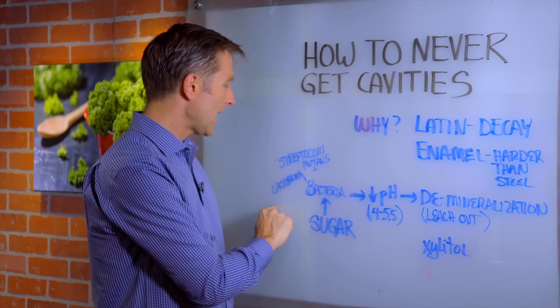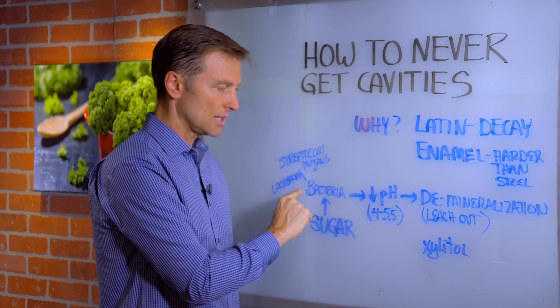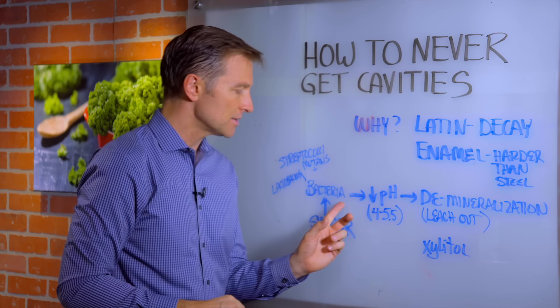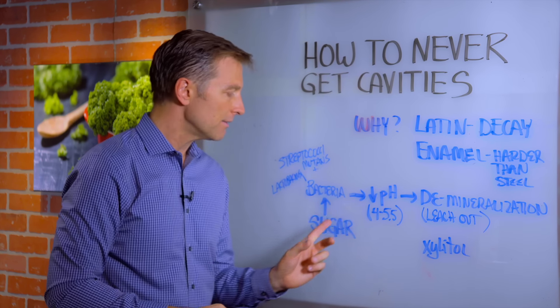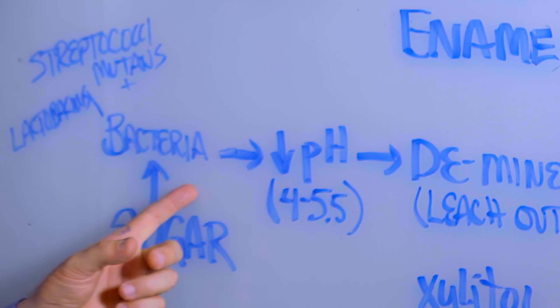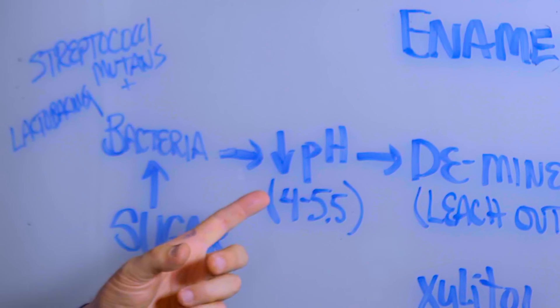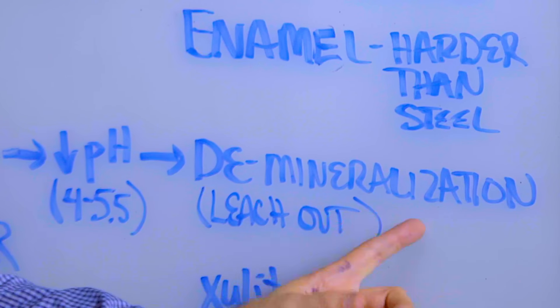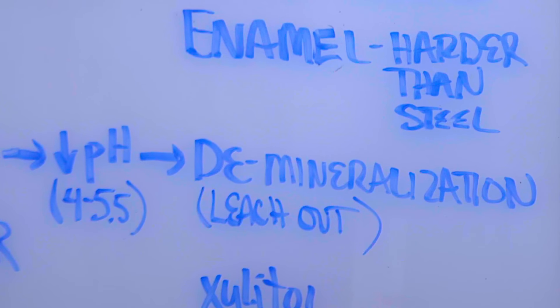Streptococcus mutans and lactobacillus. These two bacteria are fed — you got it — sugar. So when you consume too much sugar, you get too much bacteria, you get an acid pH, and it starts dissolving the teeth.